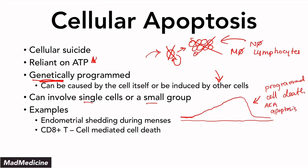Another example is CD8-positive T-cell-mediated cell death. This is an example of an external cell causing other cells to die — CD8 cytotoxic T-cells can cause other cells to undergo apoptosis. Finally, there is embryogenesis, in which cells grow and are killed off in a programmed fashion to ensure the embryo develops into a fetus properly. All of this is because of apoptosis.